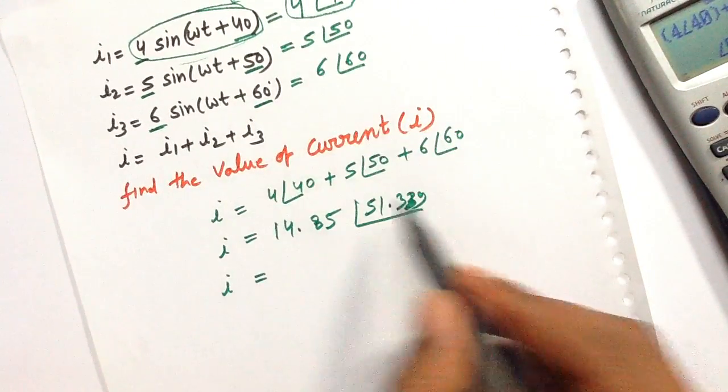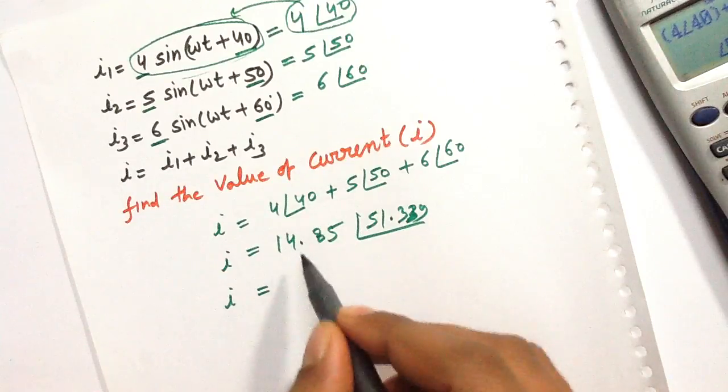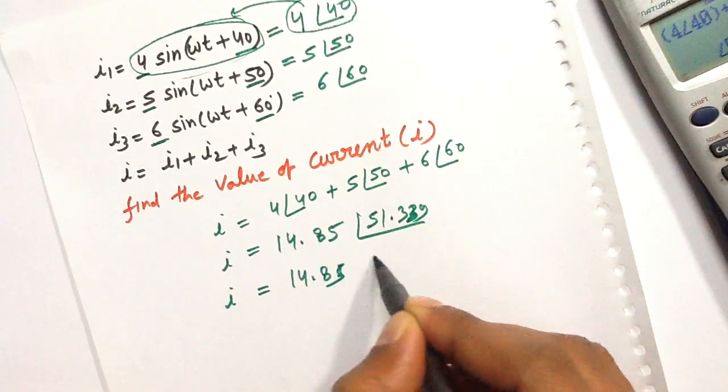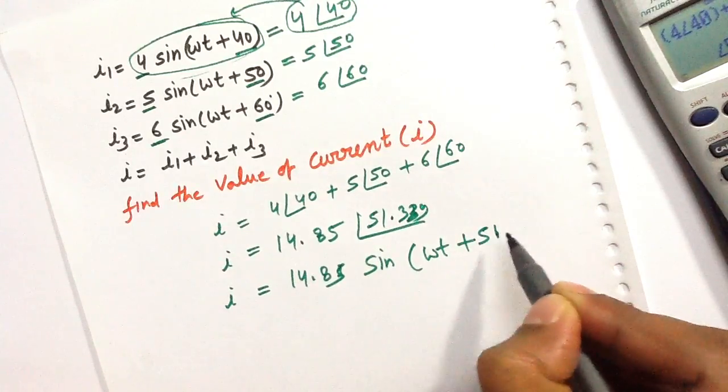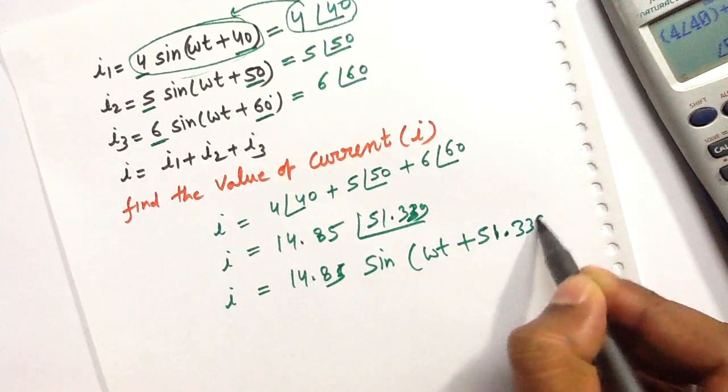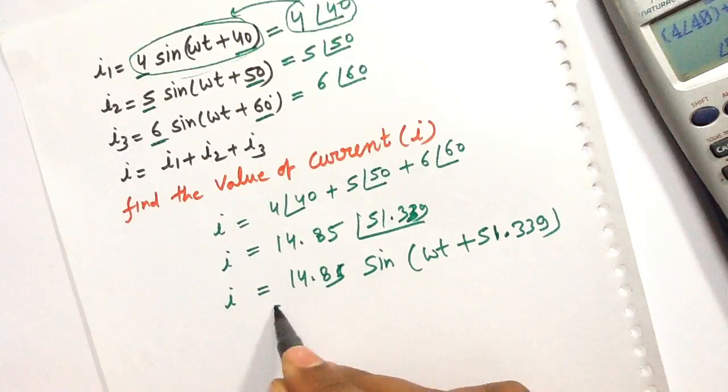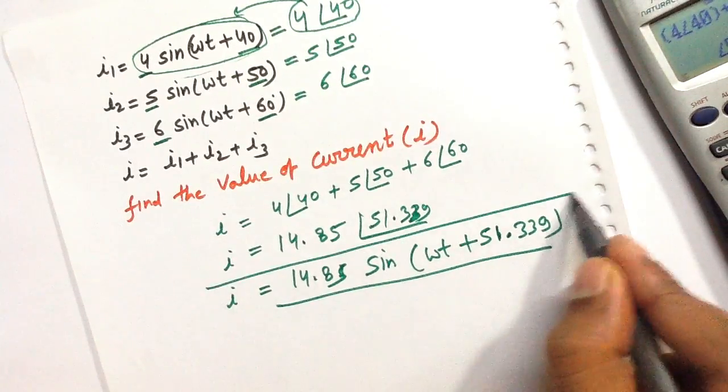In the same way, we can write our answer as 14.85 sin(ωt + 51.339). This is the solution.